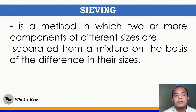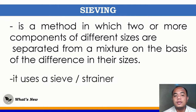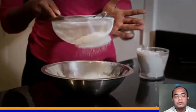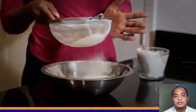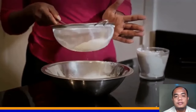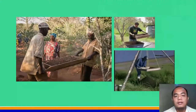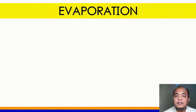We have sieving. Sieving is a method in which two or more components of different sizes are separated from a mixture based on the difference in their sizes. It usually uses a sieve or strainer — like separating sand and stones. As shown on your screen, this is an example of sieving, separating stone and sand.